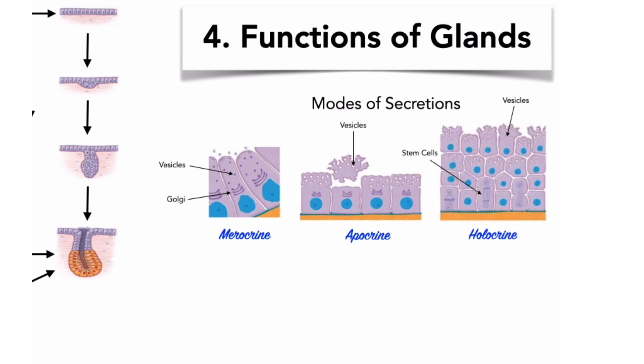In holocrine secretion, the secretion is actually released by the bursting or rupturing of the cell. The entire cell becomes packed with secretory vesicles and then bursts. This happens, for example, in sebaceous glands, which are associated with hair follicles. They produce an oily hair coating by means of holocrine secretion. Holocrine secretion occurs as the superficial gland cell ruptures. Continued secretion involves, therefore, the replacement of these cells through the mitotic division of underlying stem cells.